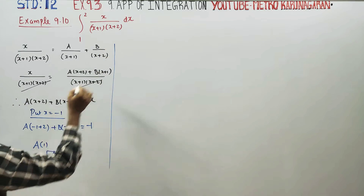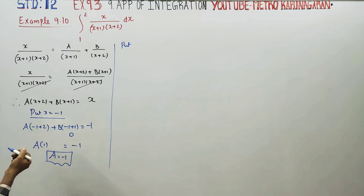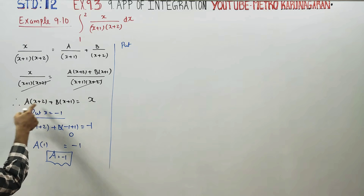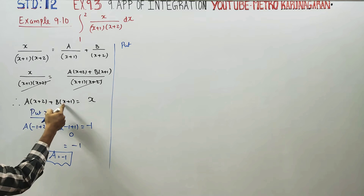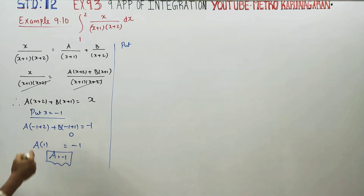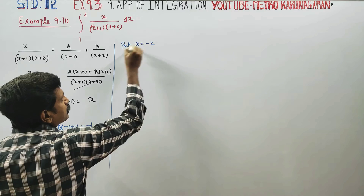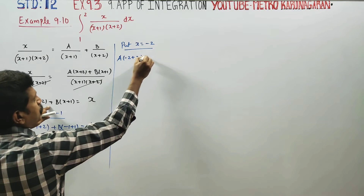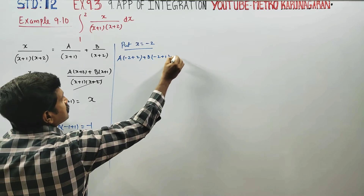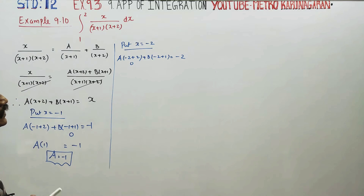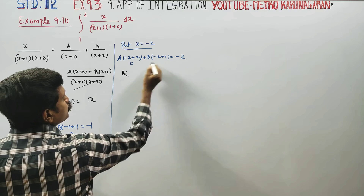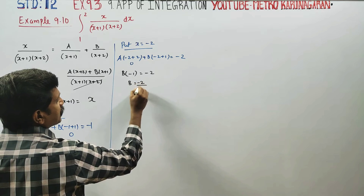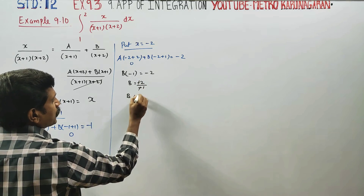Now put x equal to minus 2. Then A into (minus 2 plus 2) plus B into (minus 2 plus 1) equals minus 2. The first term becomes 0, so B into (minus 1) equals minus 2. Dividing, the minus signs cancel and B equals 2.